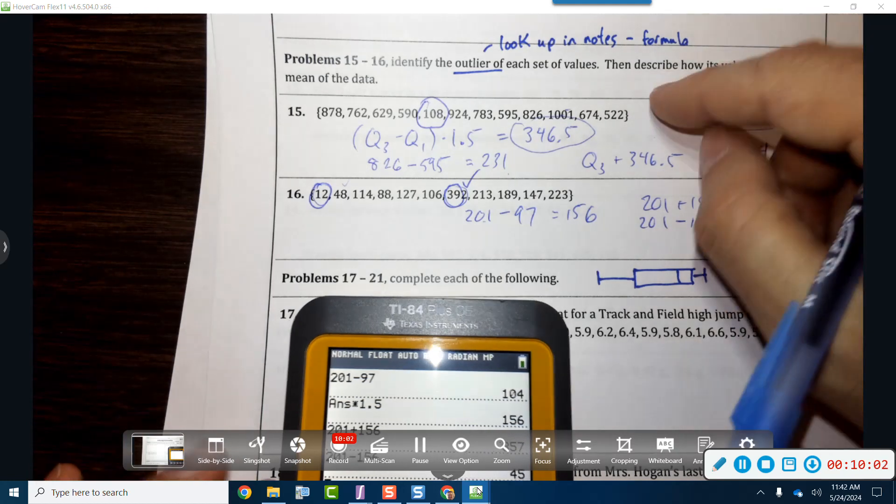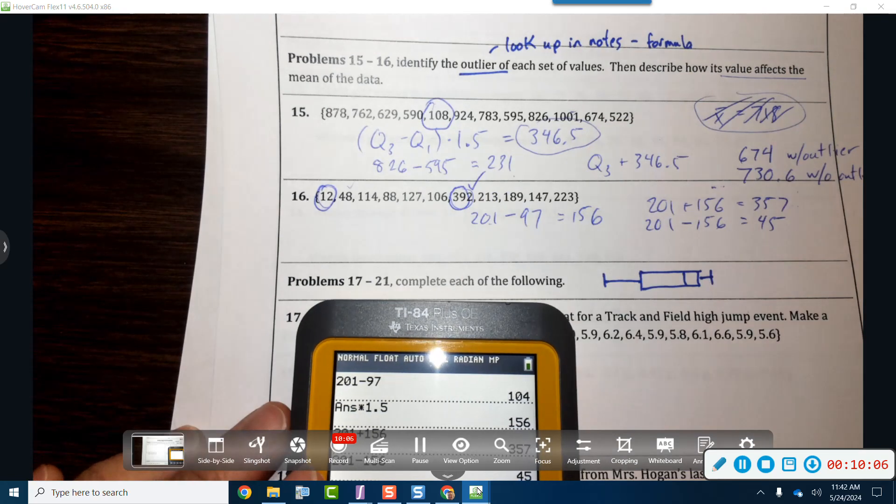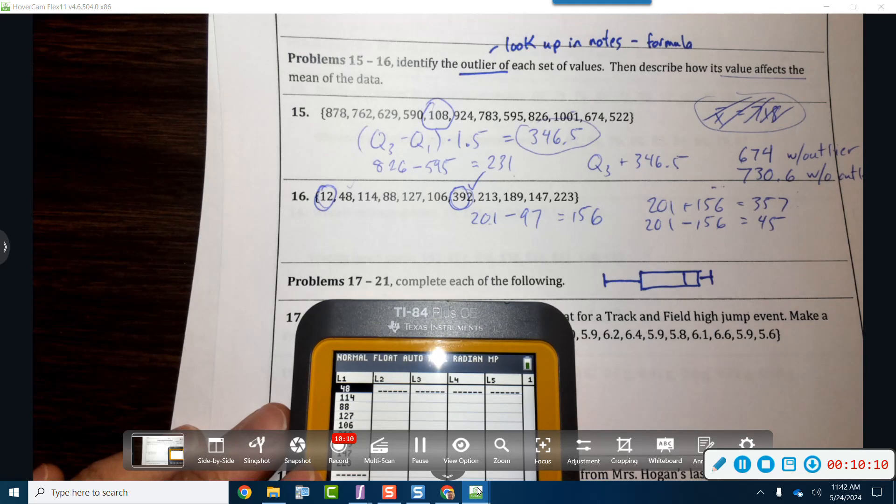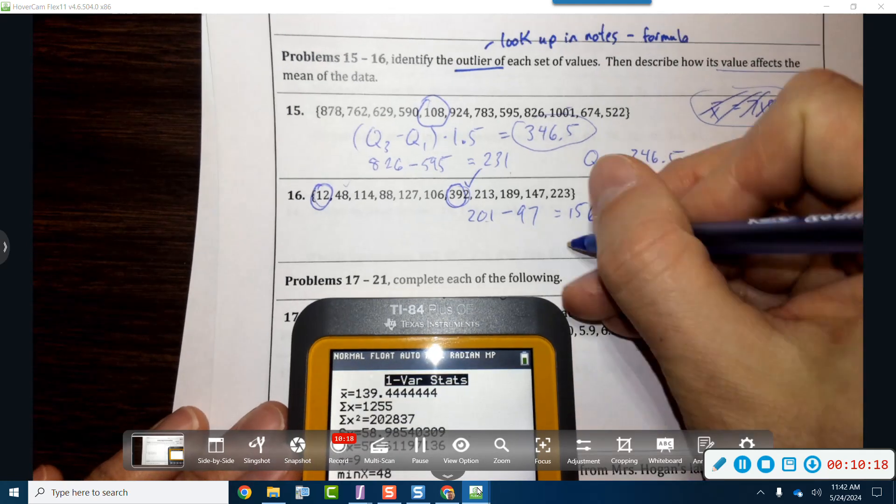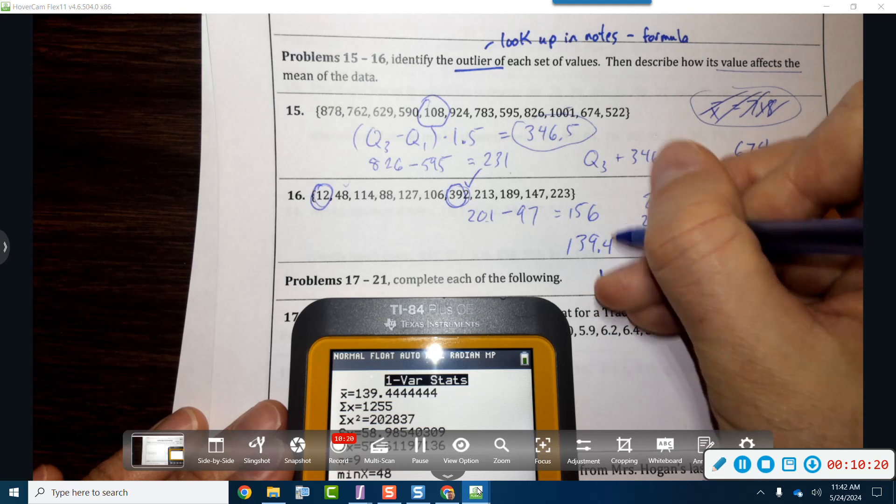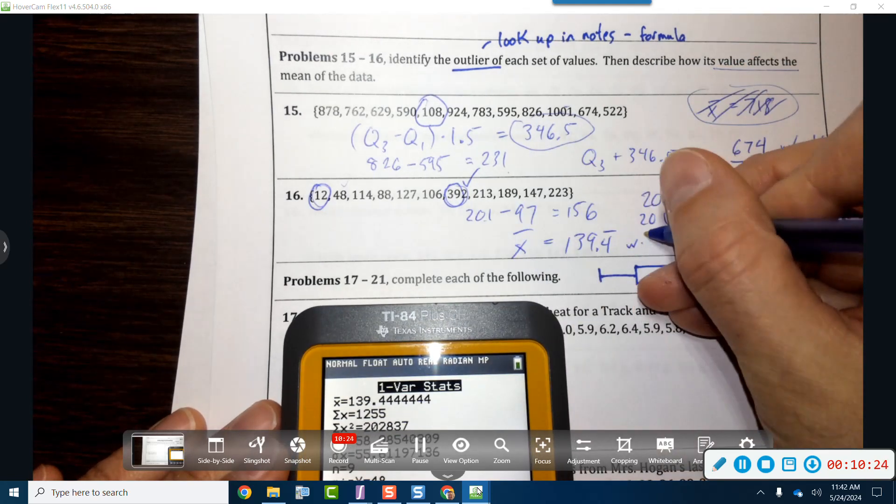So what we would do is we would then describe the effects of both of them in the data. When we went to stat edit, let's go ahead and find the mean here. So we got a mean of 139.4 without the outliers.